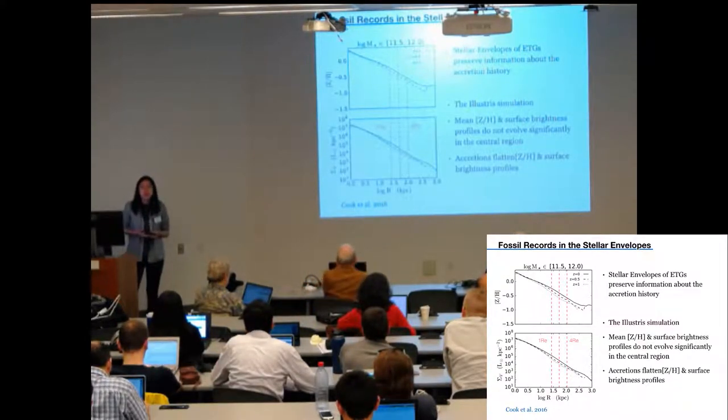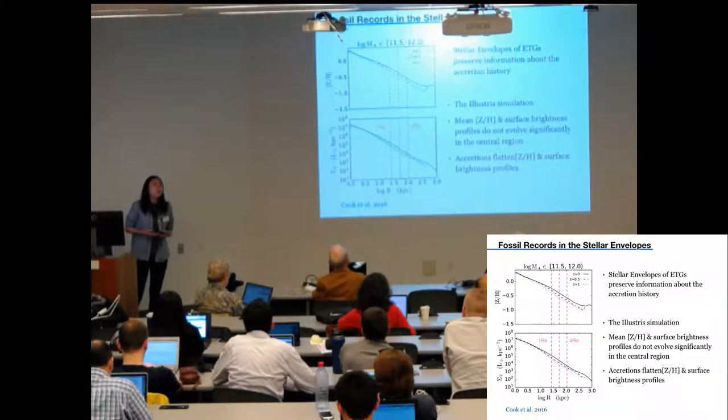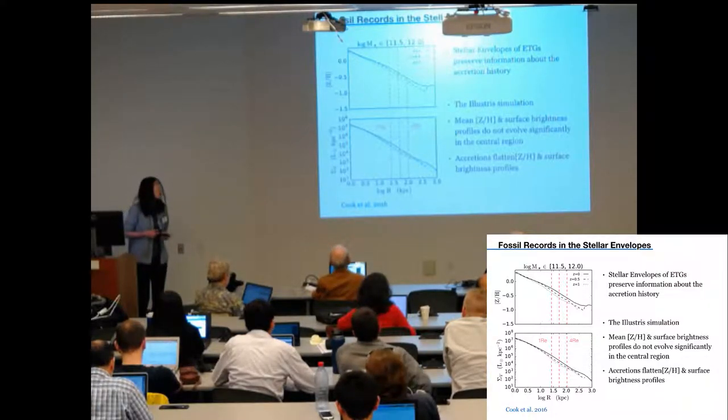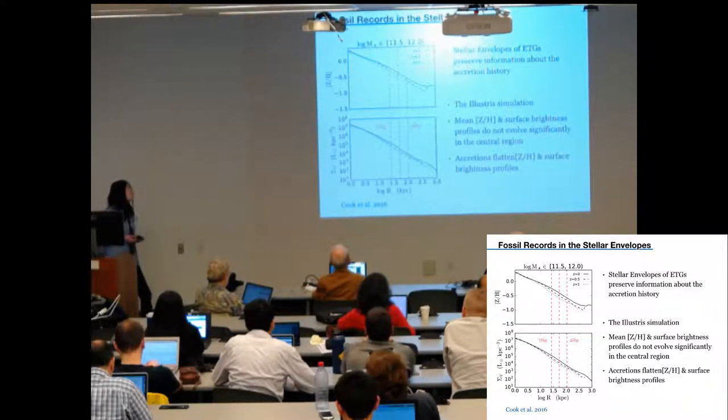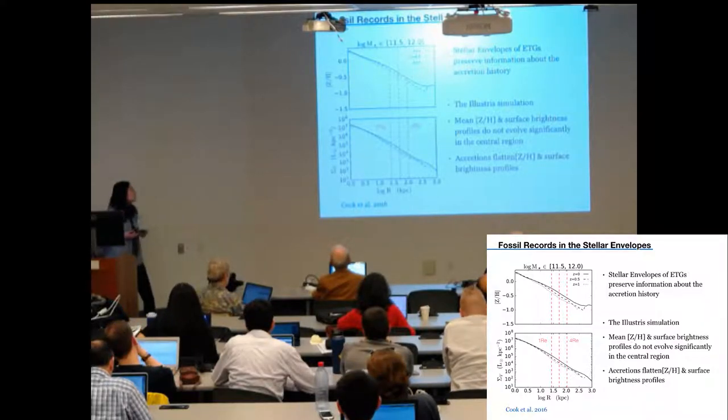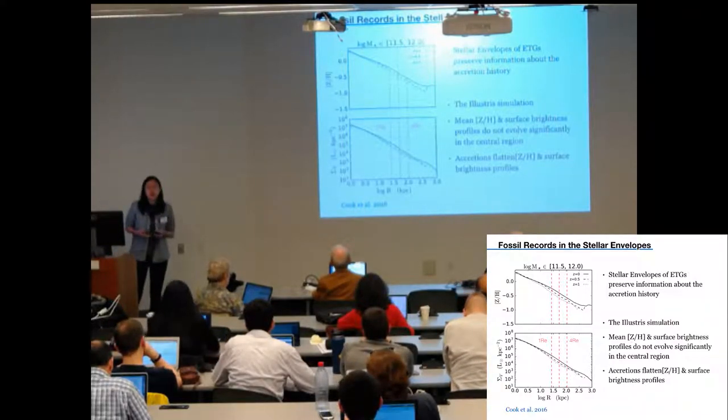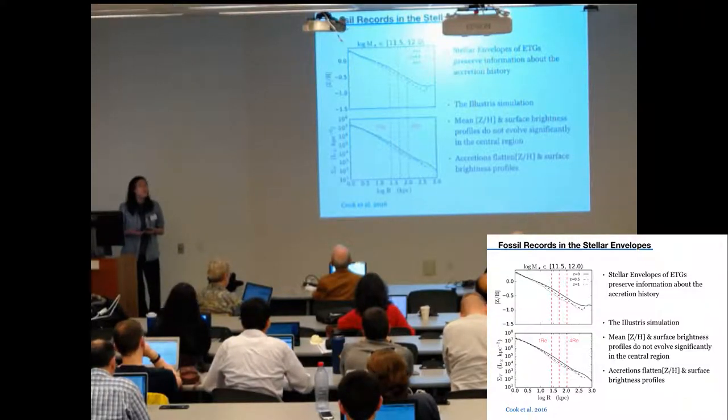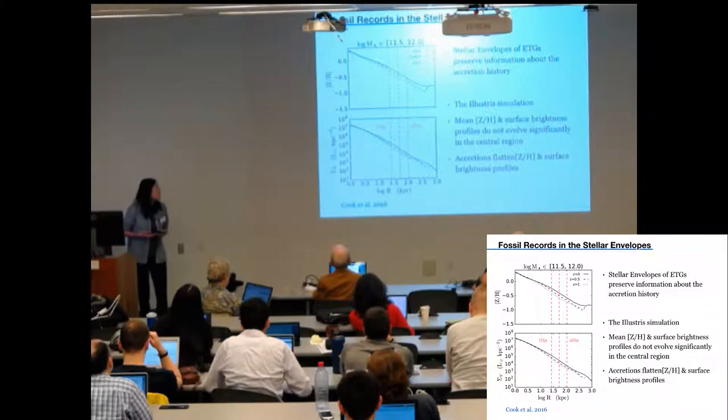Studying the stellar population at large radius is hard, but it is also very useful. The figure here is from a study led by Ben Cook in 2016. They used the Illustris simulation to see the evolution of the mean metallicity and surface brightness profile from redshift one to zero, during which the evolution is dominated by ex-situ mergers.